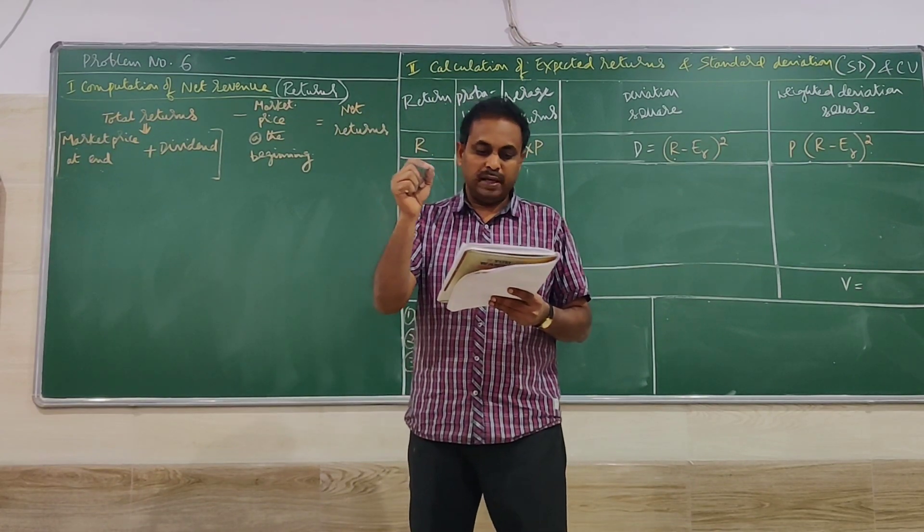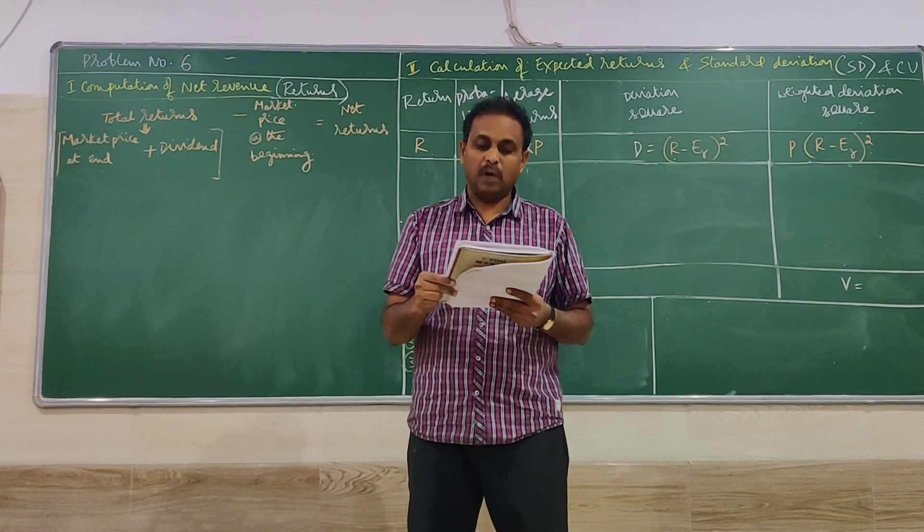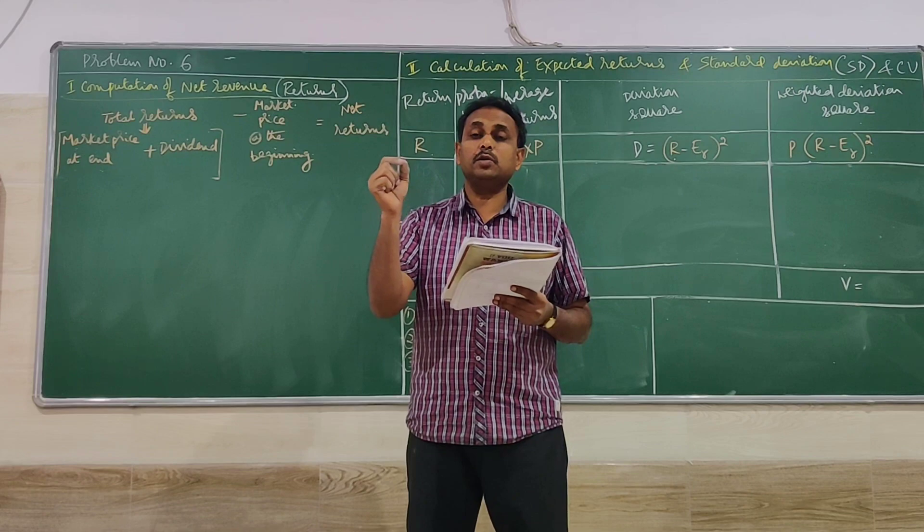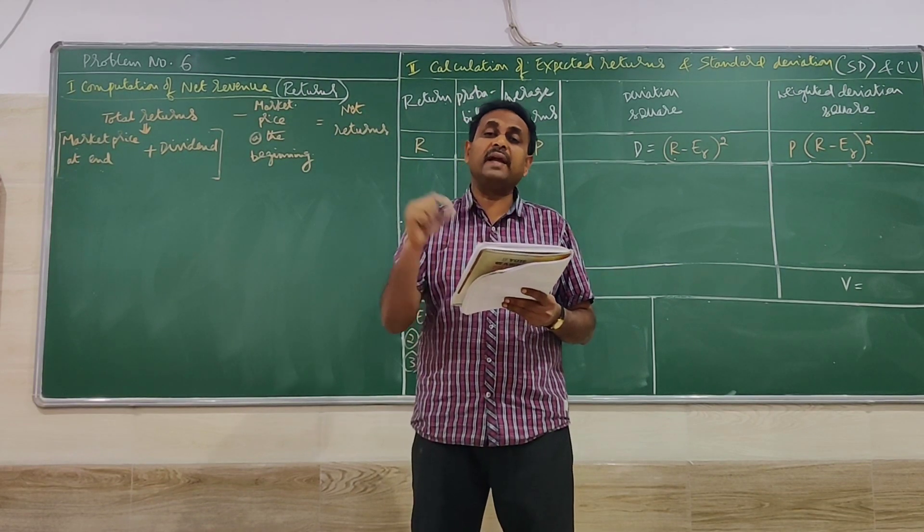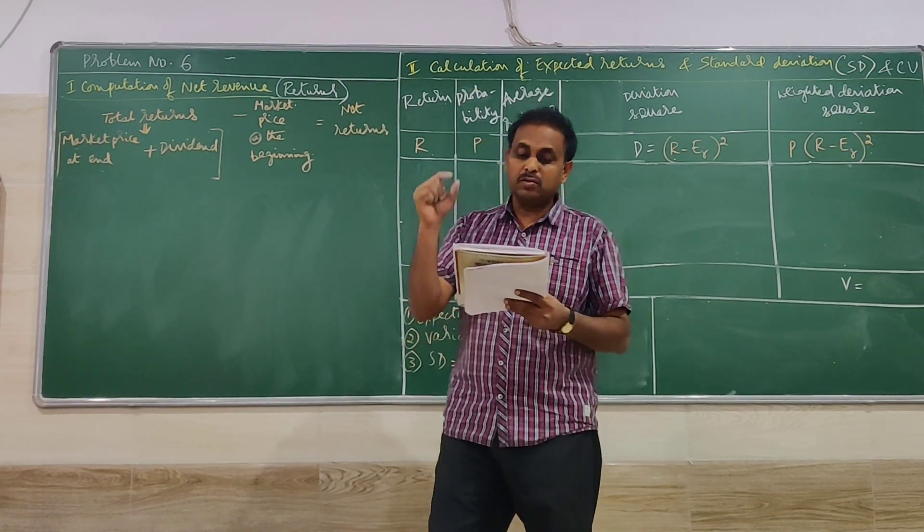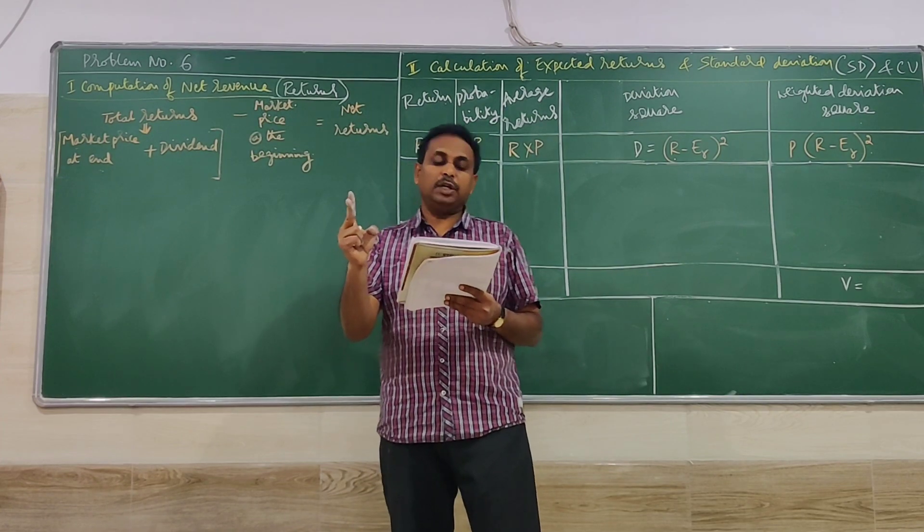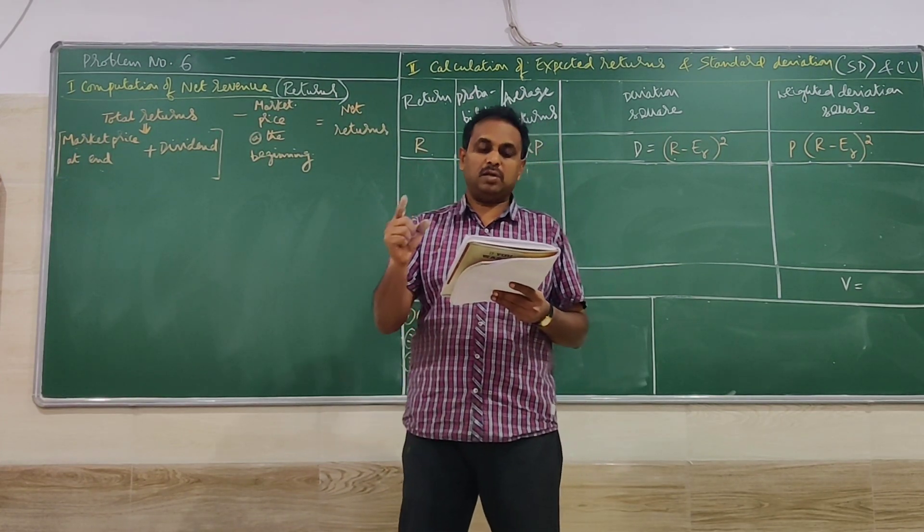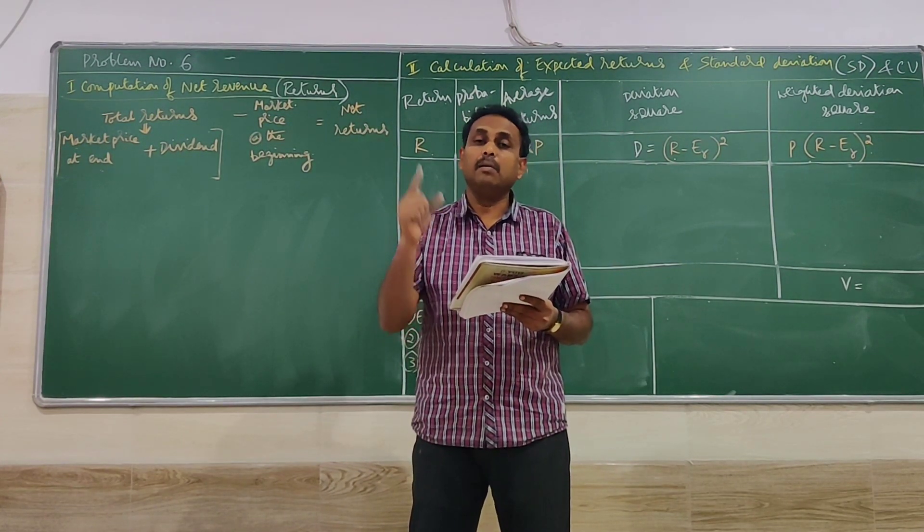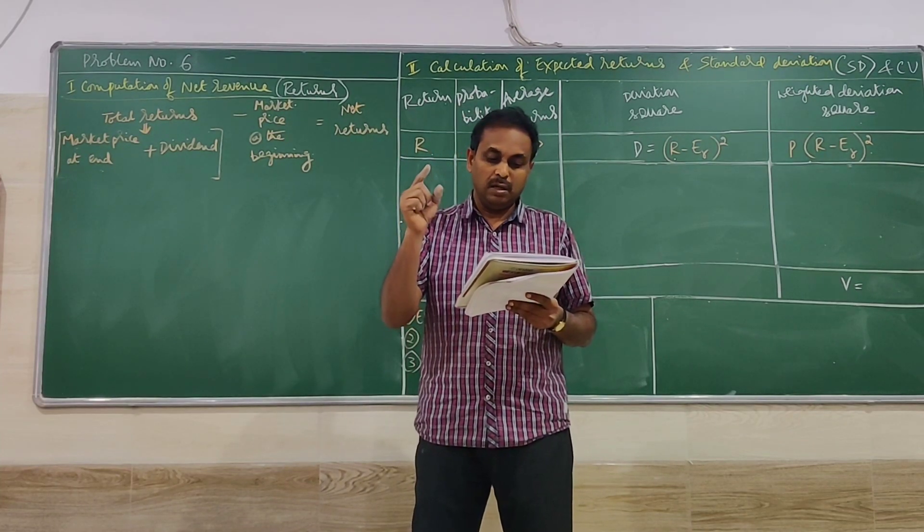This is a stock costing rupees 150 that pays no dividend. So you have to read this sentence carefully. In one sentence there are two pieces of information: a stock costing Rs. 150 pays no dividend. So two parts are there.